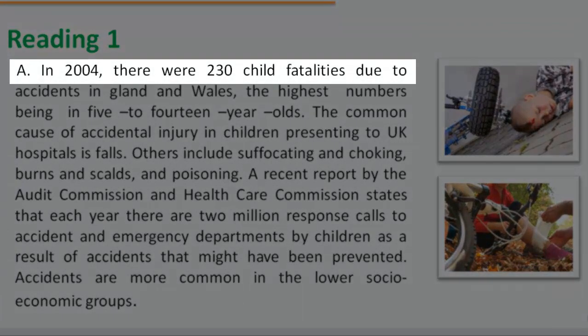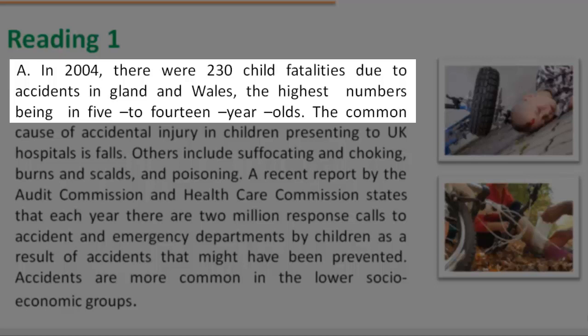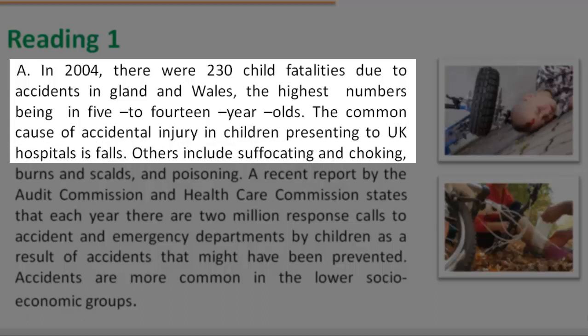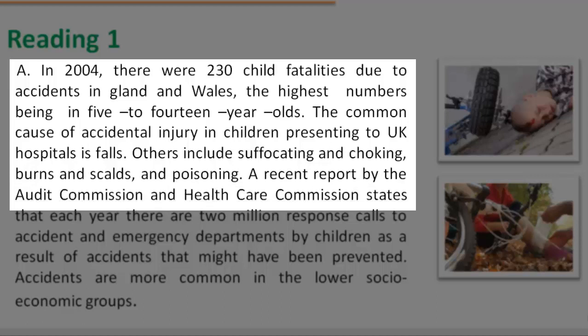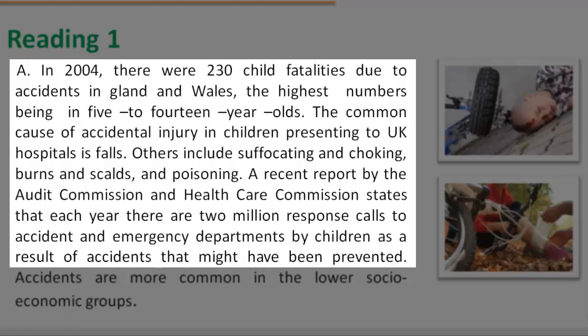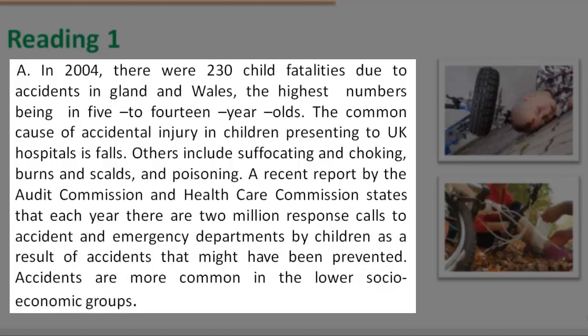In 2004, there were 230 child fatalities due to accidents in England and Wales, the highest numbers being in 5 to 14-year-olds. The most common cause of accidental injury in children presenting to UK hospitals is falls. Others include suffocating and choking, burns and scalds, and poisoning. A recent report by the Audit Commission and Health Care Commission states that each year there are 2 million attendances at accident and emergency departments by children as a result of accidents that might have been prevented. Accidents are more common in the lower socioeconomic groups.